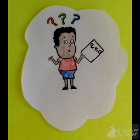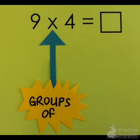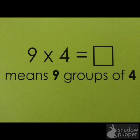Well, I'm going to give you one strategy that you can try. If you want to solve a multiplication problem like 9 times 4, one important thing to remember is that the multiplication symbol means groups of. So I could read this multiplication problem as 9 groups of 4.